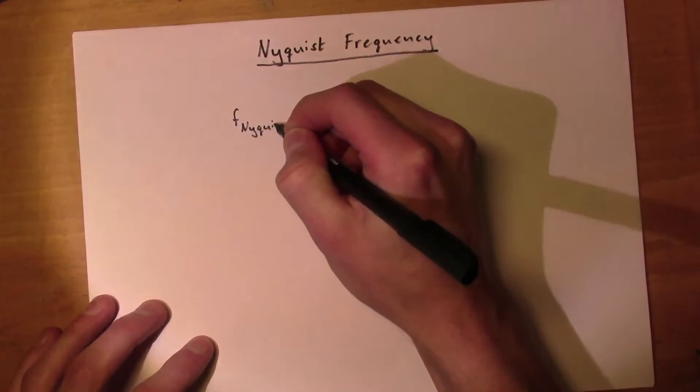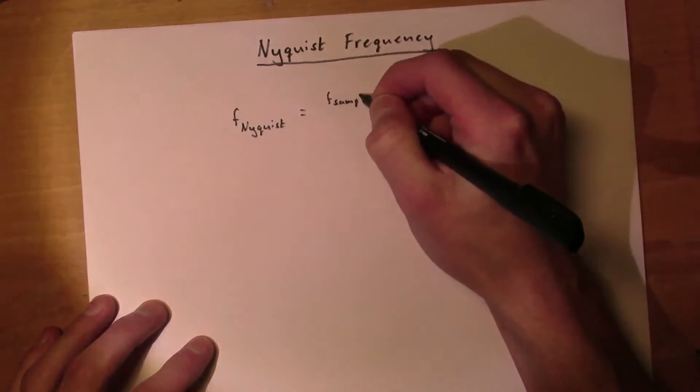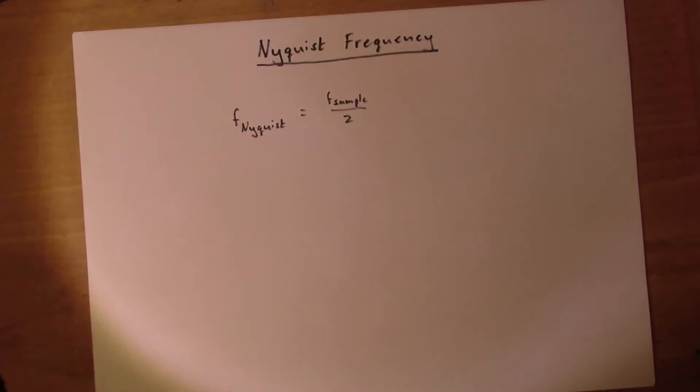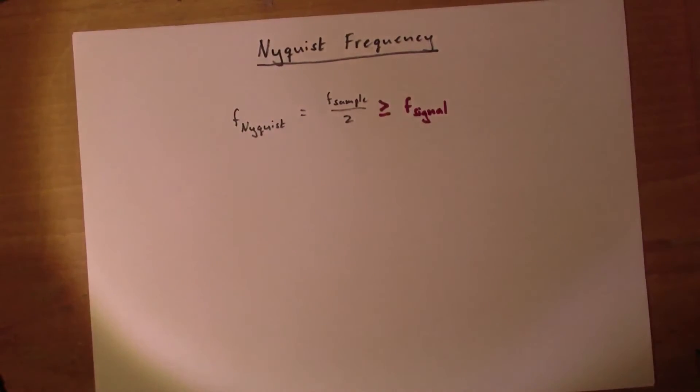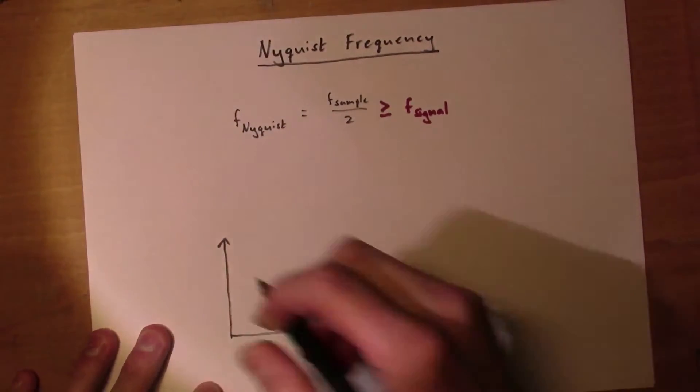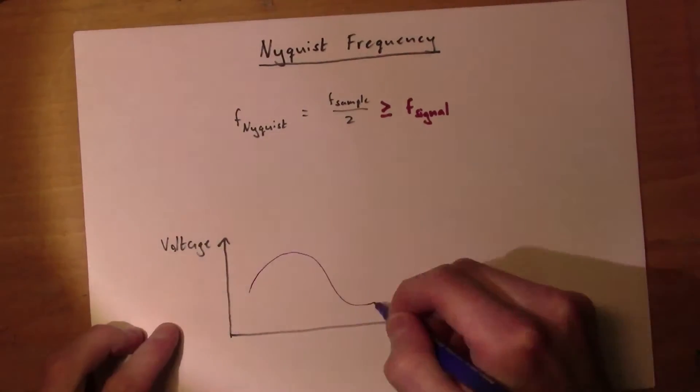It is defined as the sampling frequency of the recorder divided by 2, thus the frequency of the signal must be lower than the Nyquist frequency. At the Nyquist frequency, only two sample points will be collected per cycle.